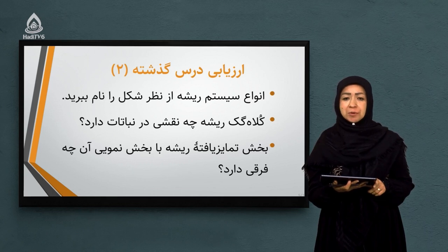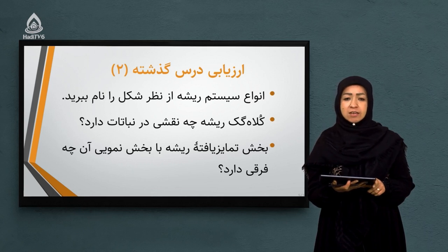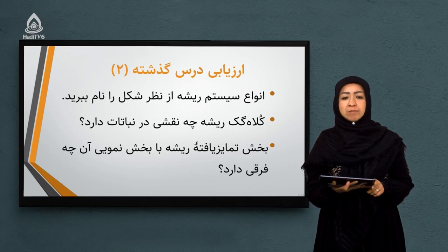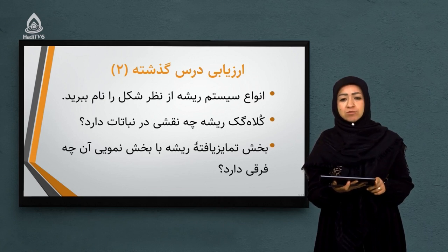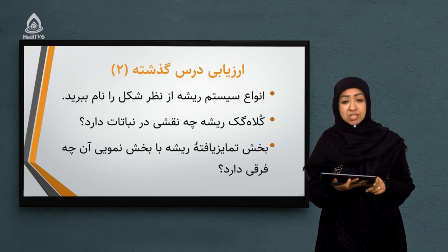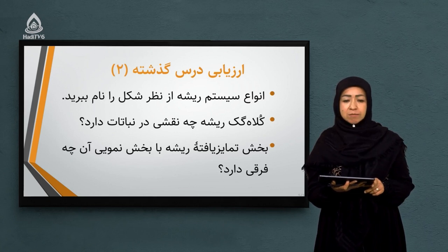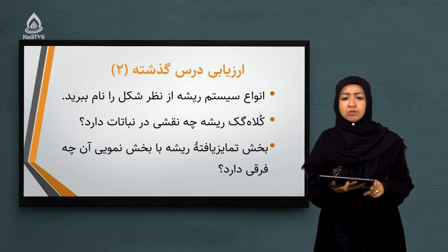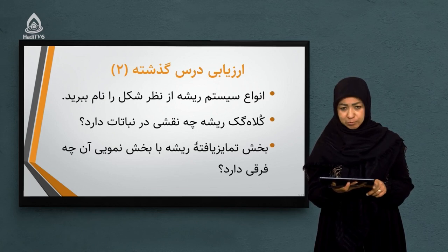سوال بعدی: بخش تمایزیافته ریشه با بخش نمویی آن چه فرقی دارد؟ در جلسه گذشته در پای تخته برای شما سه بخش ریشه را کشیدیم. بالاتر از بخش حجرات نمویی یک بخشی هست به نام بخش تمایزیافته. در بخش تمایزیافته، حجرات از خودشان مویگ‌هایی به بیرون رشد میدهند که کار جذب آب و مواد معدنی را انجام میدهد. حجرات زمانی تمایز پیدا میکنند که یک ویژگی یا توانایی جدیدی را کسب بکنند.